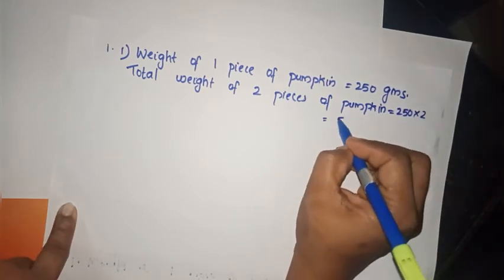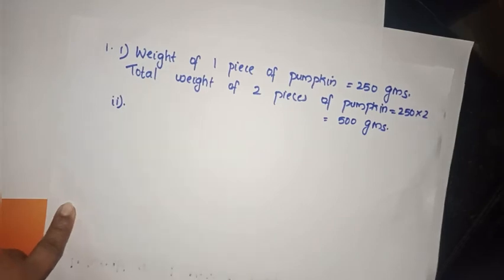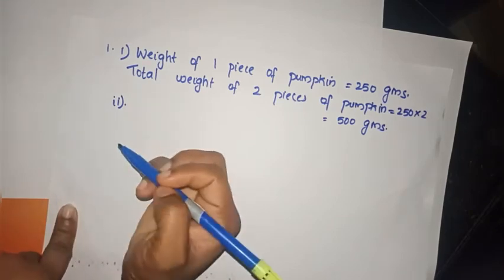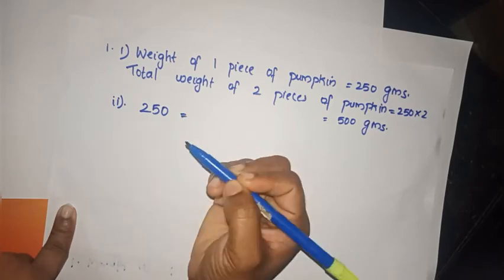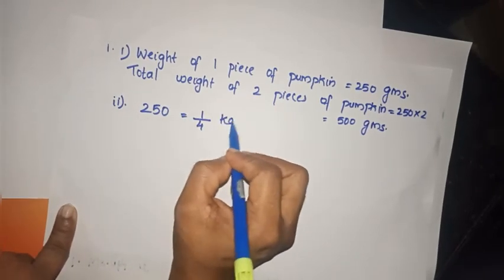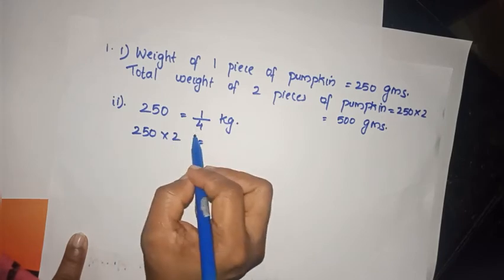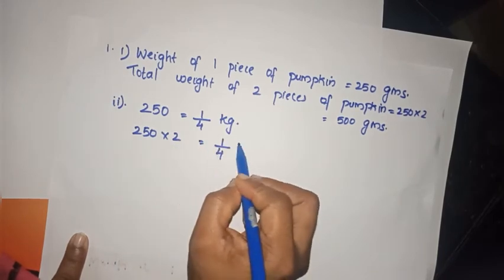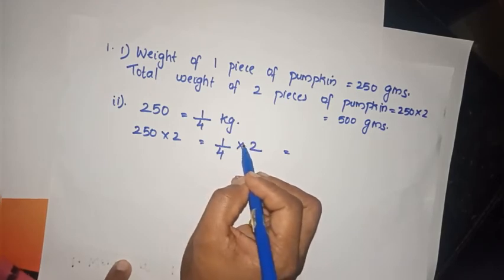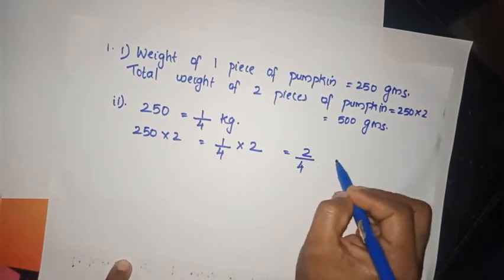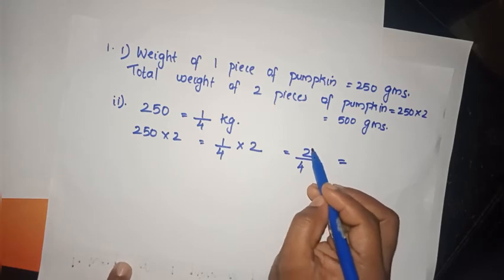Two pieces of pumpkin gives us 500 grams. The second part: what if the weight is put in kilograms? 250 grams is 1/4 of a kilogram, so we have to calculate 1/4 into 2, which equals 2/4.